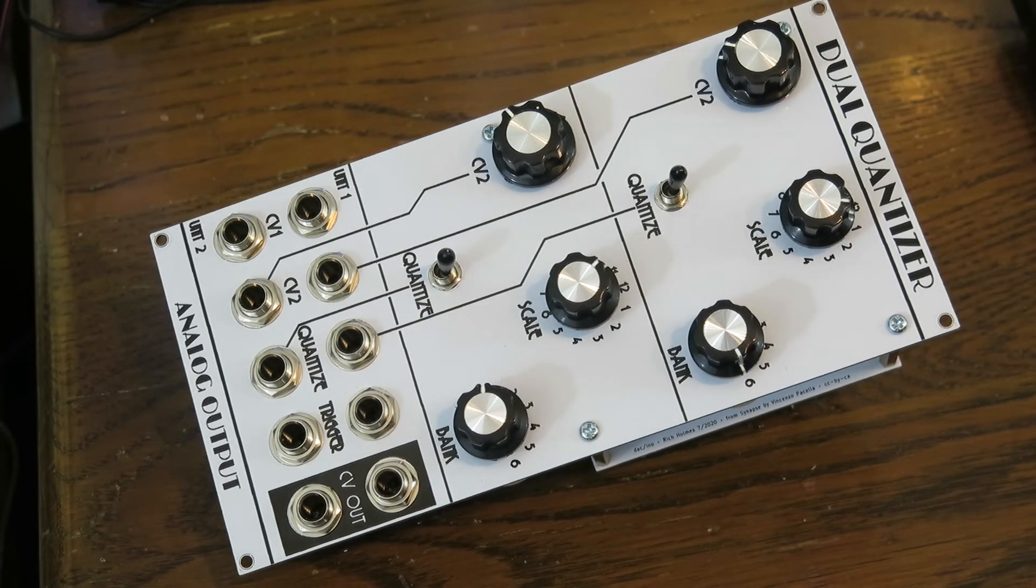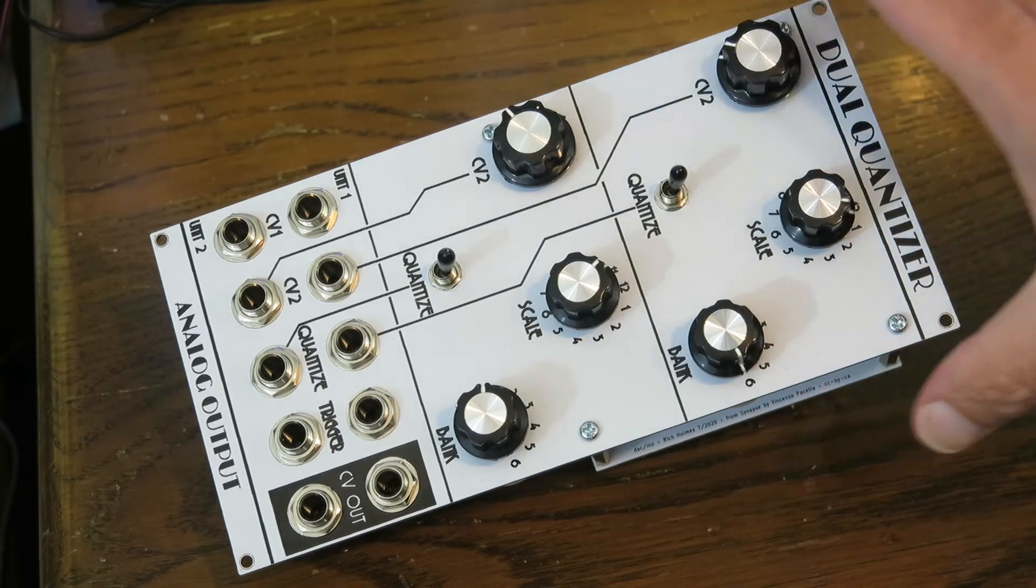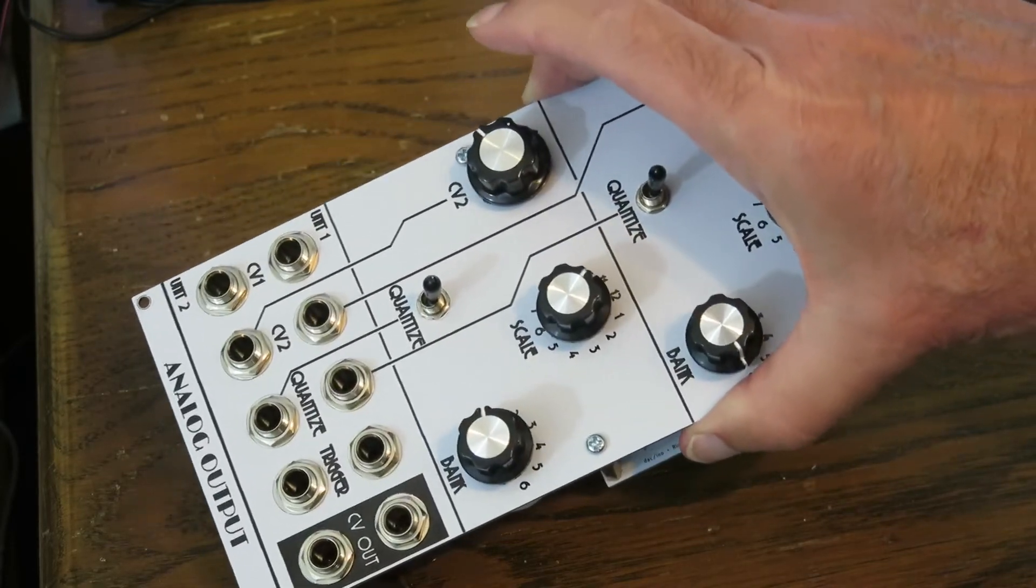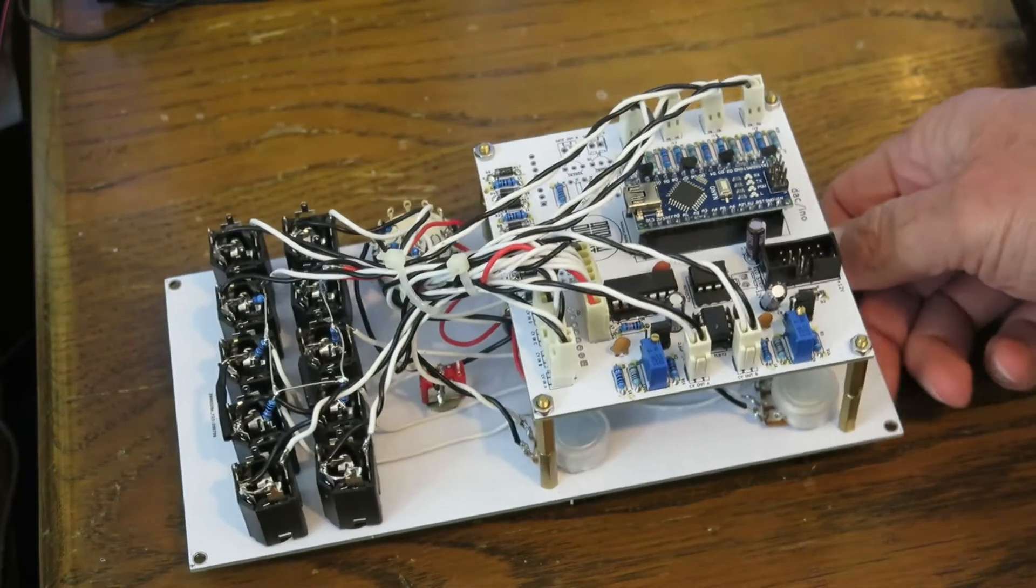So what's this thing like hardware-wise? What's going on? Well, let's take a look at it. Here is the module. This particular one is built in Cosmo format, 20 centimeters, and there's no particular reason you couldn't build this in Eurorack format. It would be kind of wide for a typical Eurorack module, but it would work.